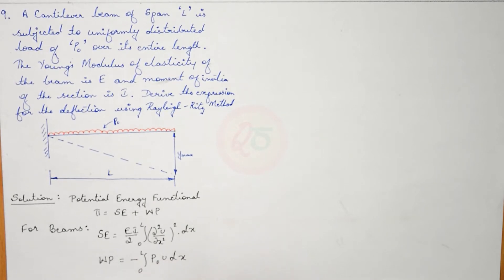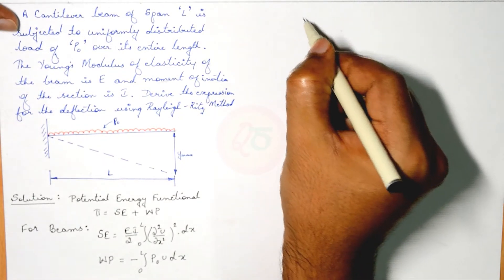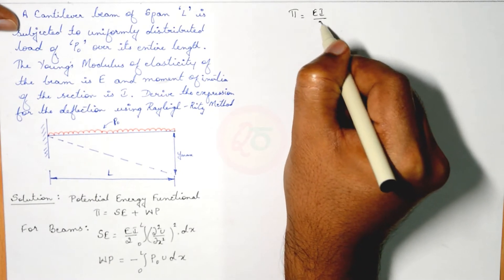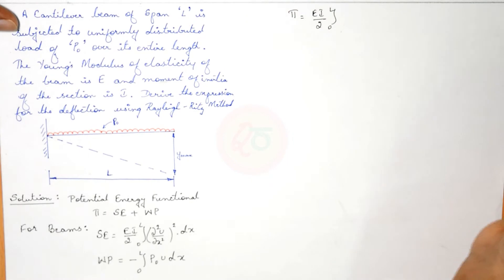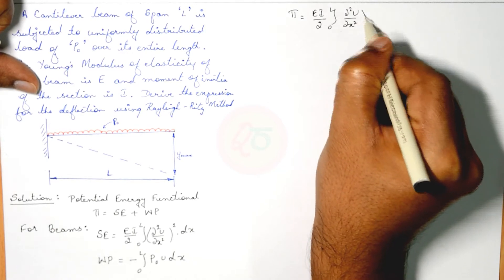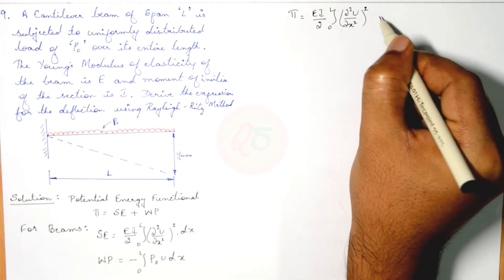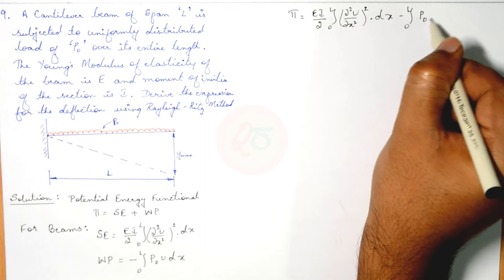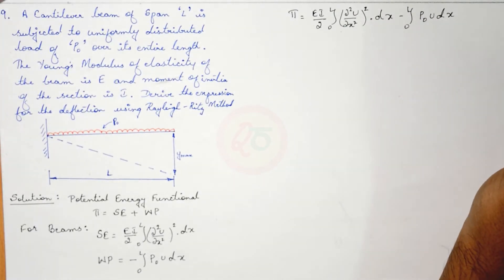Substituting these, we obtain the final potential energy functional as: π = EI/2 · ∫₀ᴸ (∂²u/∂x²)² dx − ∫₀ᴸ P0·u dx. This is the potential energy functional — let me call this equation 1.